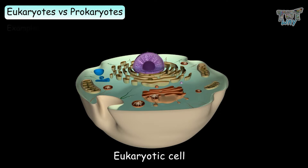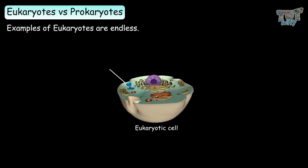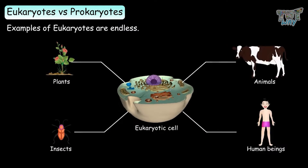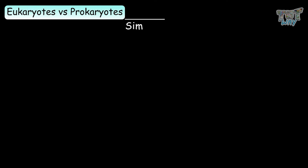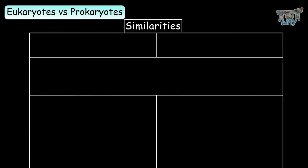Examples of eukaryotes are endless. All the plants, animals, insects, and you yourself are made up of eukaryotic cells, so we are all eukaryotes.